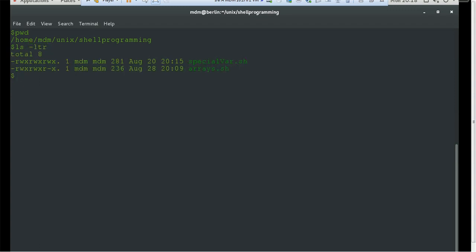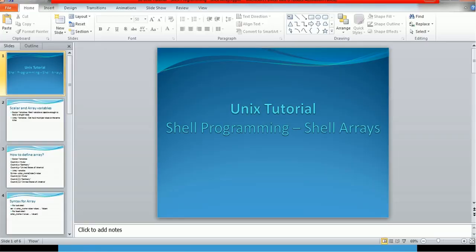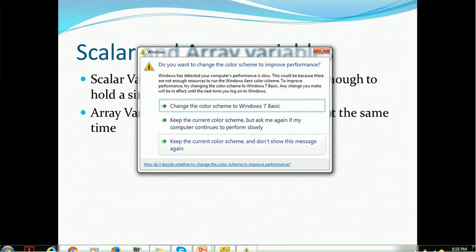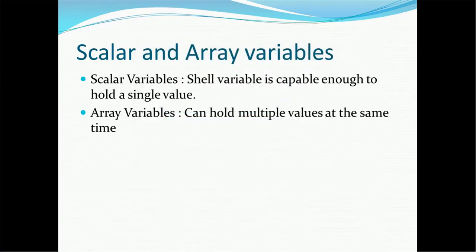Before jumping into that, let's understand some basic concepts: scalar and array variables. Arrays are variables which hold multiple values. The difference is that scalar variables are shell variables capable of storing only one value at a time, while arrays hold multiple values. There is no specific limit for arrays — of course there is a memory limit, but you can hold as many values as you want.